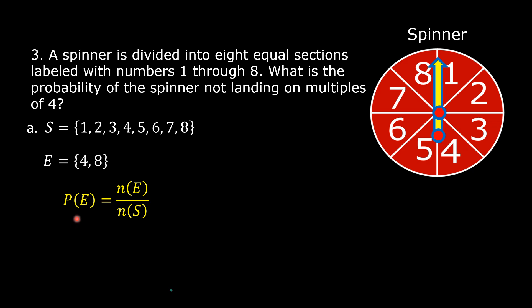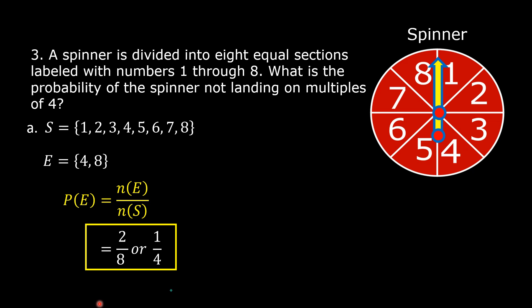The probability of an event is equal to the number of outcomes in the event over the number of all the outcomes in the sample space. The number of outcomes in the event is 2, and the number of outcomes in the sample space is 8. So replace N of E by 2 and N of S by 8. This is now equal to 2 over 8, or 1 fourth. So the probability of the event of the spinner landing on multiples of 4 is 1 fourth.